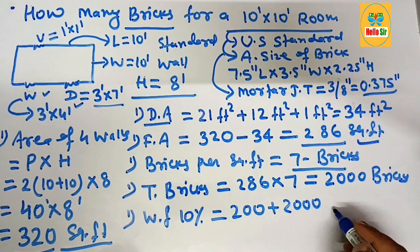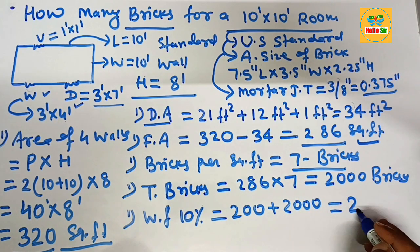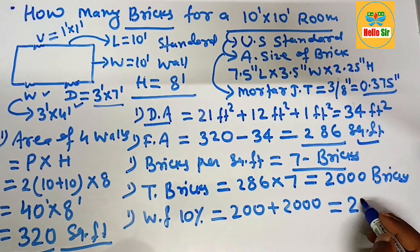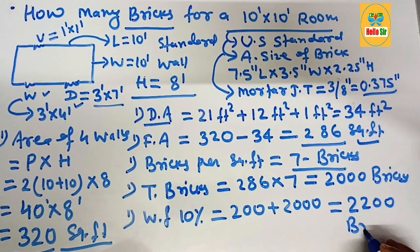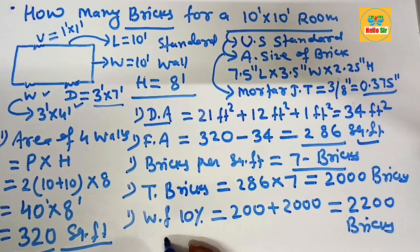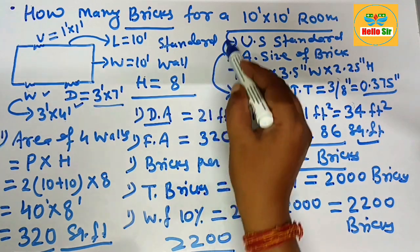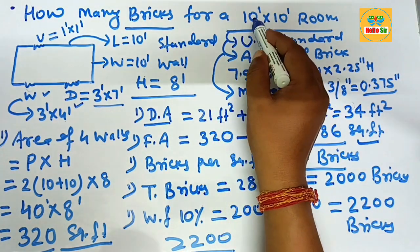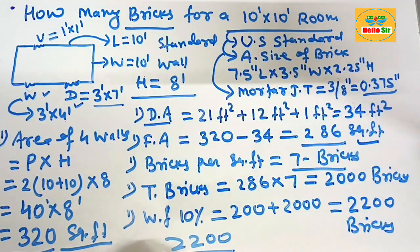Adding the waste of 200 to the 2000 bricks gives approximately 2200 bricks. This means you need a minimum of approximately 2200 bricks to build a 10 foot by 10 foot room. Thank you.